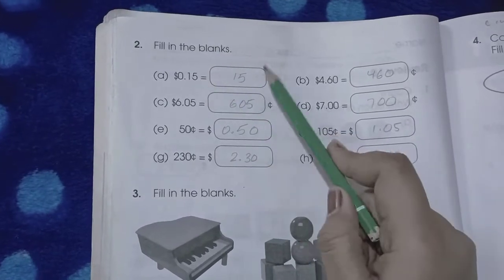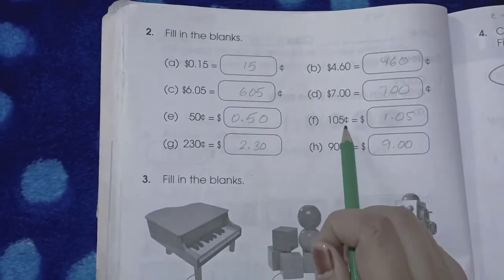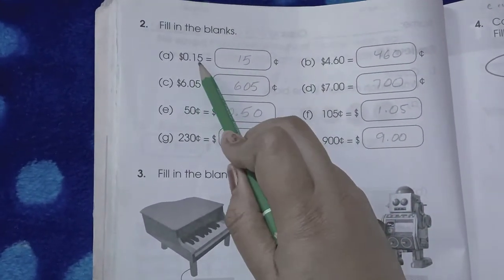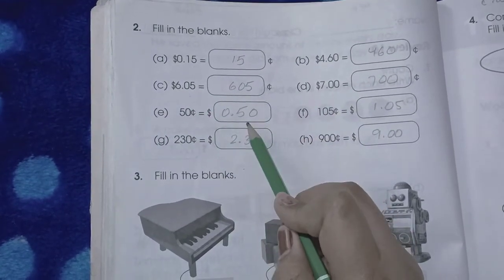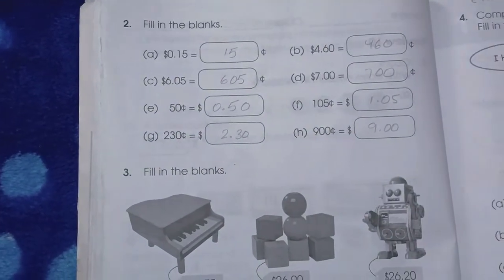Page number 42. Here we simply have to convert dollars into cents and cents into dollars. So 15 cents, 605 cents, 1 dollar 5 cents.